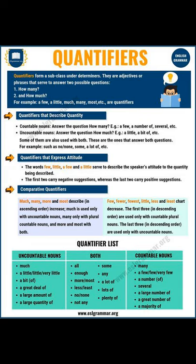There are 10 comparative or graded quantifiers: much, many, more, most, few, fewer, fewest, little, less, and least. Much, many, more, and most describe increase. Much is used only with uncountable nouns, many only with plural countable nouns, and more and most with both — for example: 'I have much time,' 'I have more time,' 'I have the most time.' Few, fewer, fewest, little, less, and least describe decrease. The first three are used only with countable plural nouns; the last three only with uncountable nouns — for example: 'He has few friends,' 'He has fewer friends,' 'He has the fewest friends.'